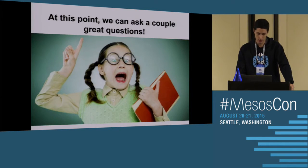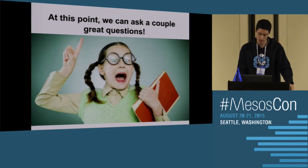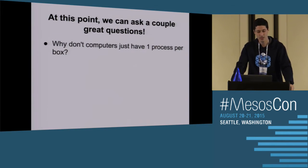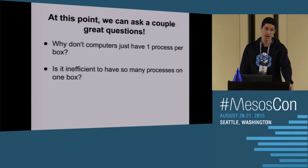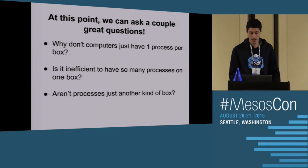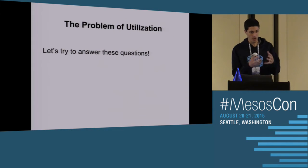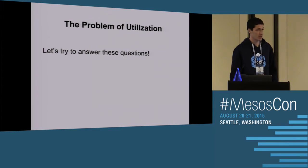This is a very powerful thing to realize, because now you can start to ask questions about utilization. Why don't computers have one process per box? Is it inefficient to have so many processes on one box? Aren't processes really just another kind of box? You have the box-in-a-box question. I want to try to answer these questions in the first half of the talk.